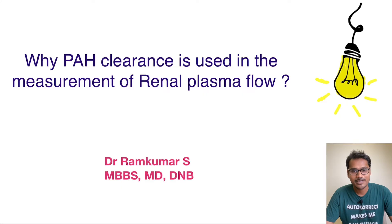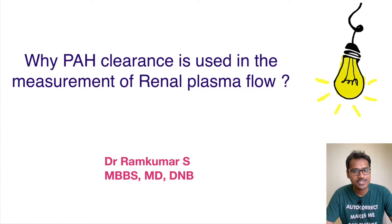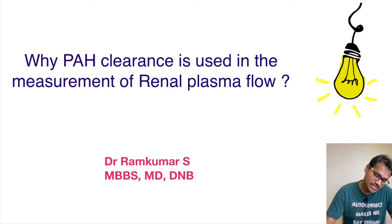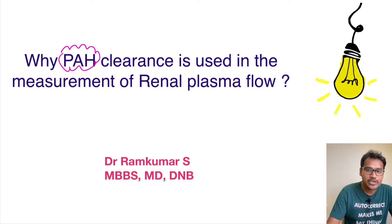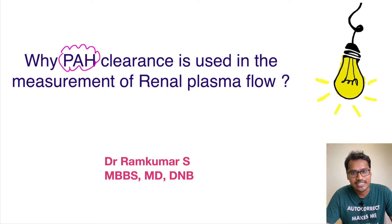Hello everyone, welcome back to my YouTube channel Physiology Learning. In today's Explain My series we are going to understand why PAH clearance is used in the measurement of renal plasma flow. This PAH is called para-aminohippuric acid.